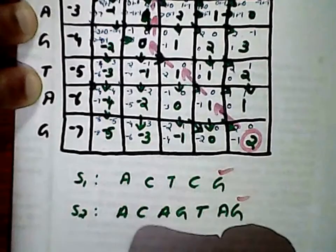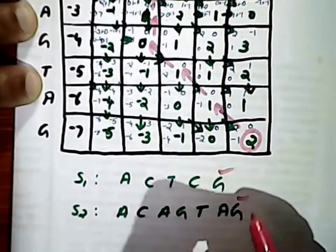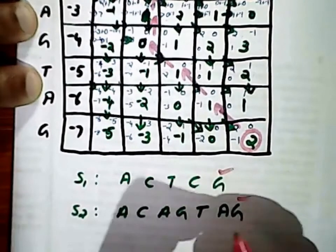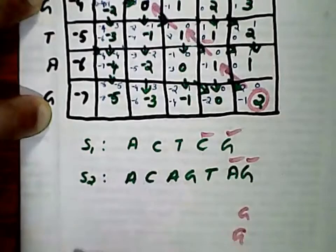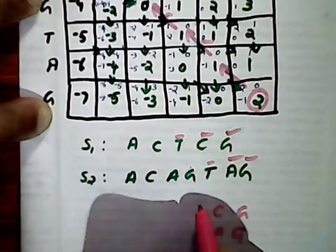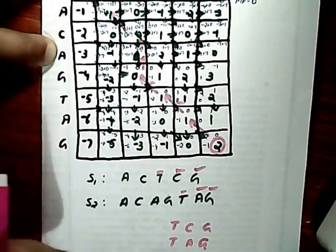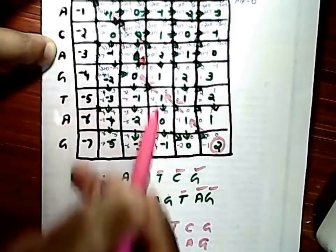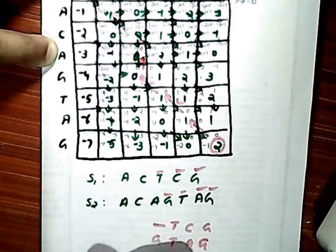Now we are going to write the alignments with alignment score two for sequences S1 and S2. The first arrow is diagonal, so we align the last two nucleotides G and G. The next arrow is also diagonal, so we align the next position as C and A. The third arrow is also diagonal, so we align the next position as T and T. The next arrow is vertical, so we place a gap in the top sequence aligned with the next nucleotide G from the left sequence, giving gap and G.